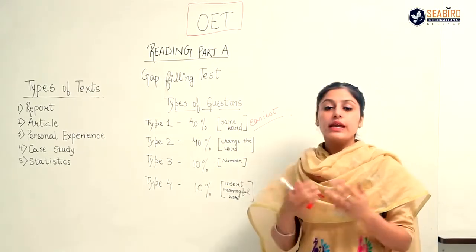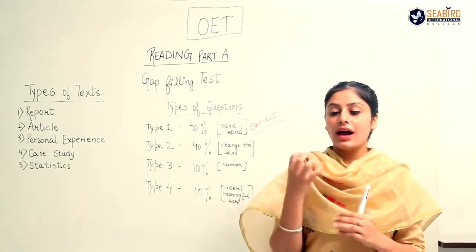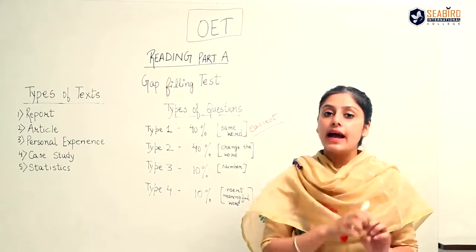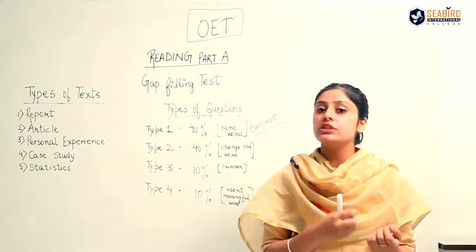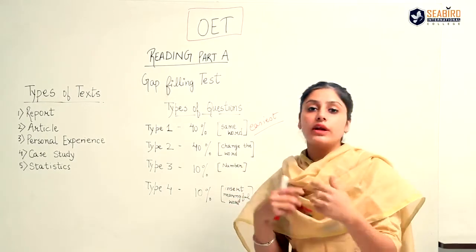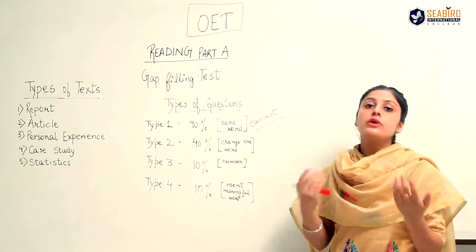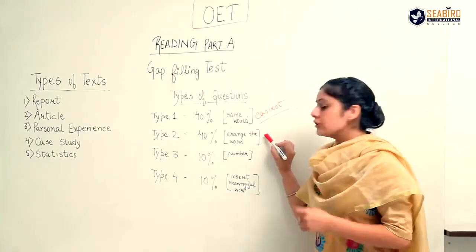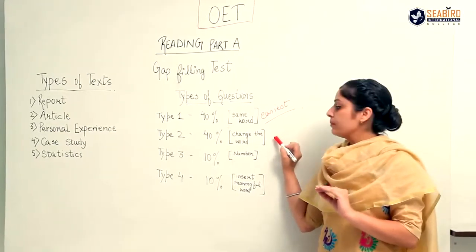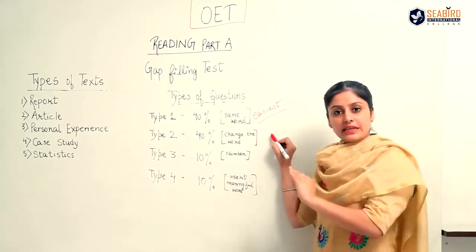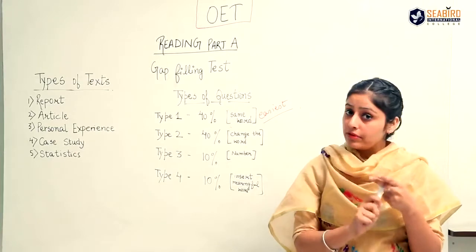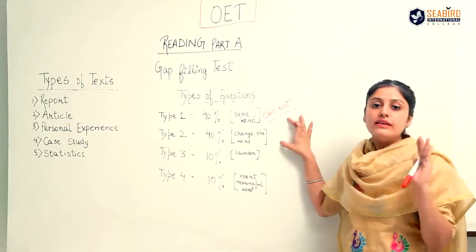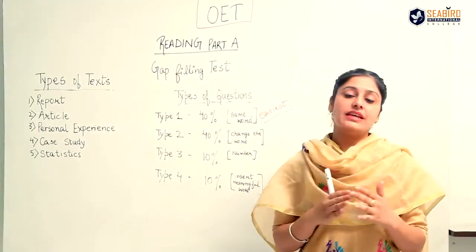Coming on to type 2 questions, here you have to change the word form. You find the keyword, locate it, and then change it — for example, from adjective to noun, or noun to adverb. Like from 'important' to 'importance,' according to the grammar and sense of the sentence. The weightage of these questions is also 40%. If you are good at grammar and vocabulary, this is not an issue. So 80% of the total questions are quite easy to attempt accurately.